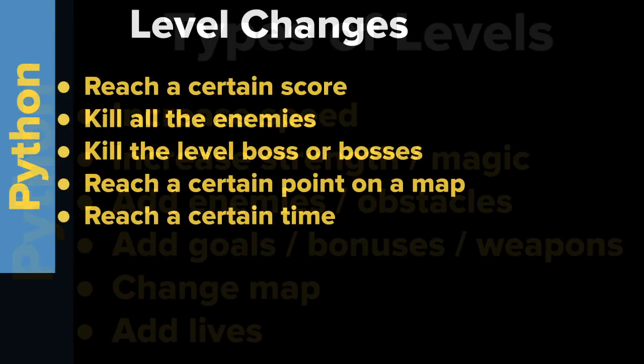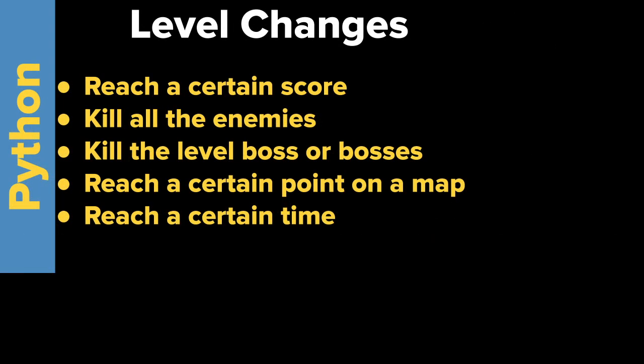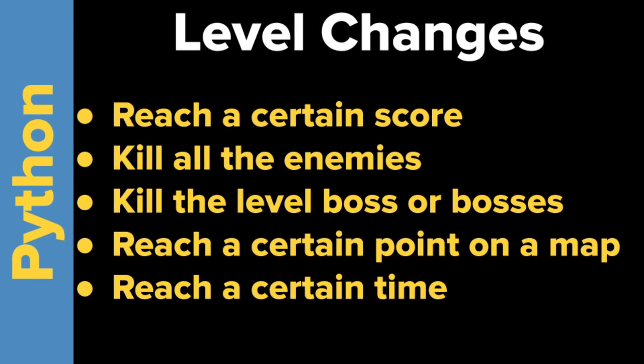Once you know what type of level you want, you have to think about what causes a level change. For example, you might change a level when you reach a certain score, when you've killed all the enemies, when you've killed the level boss, when you reach a certain point on a map — like hitting a door or exit — or you could have a countdown timer where time hits zero and the level ends.